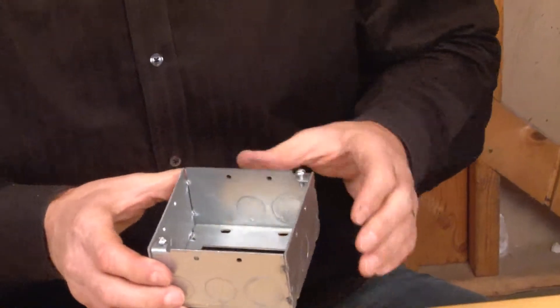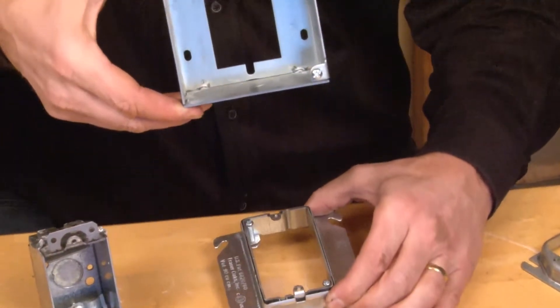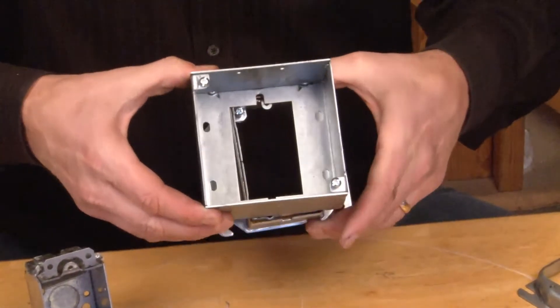If there's a single-gang plaster ring in the wall, there are slots in the bottom of the box that can be directly mounted right over it.